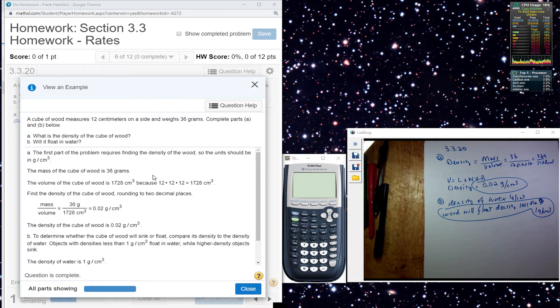With a floating water, density is equal to mass over volume. The mass is 36 grams. We have to find the volume.